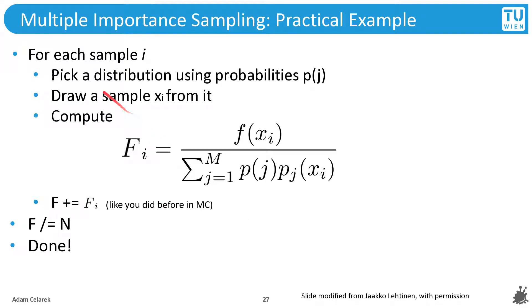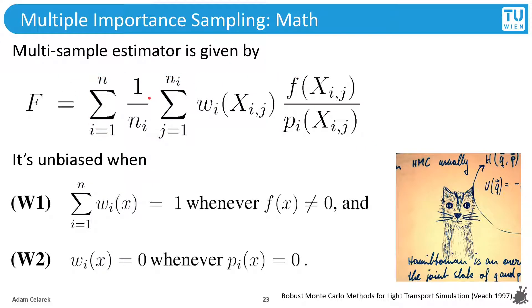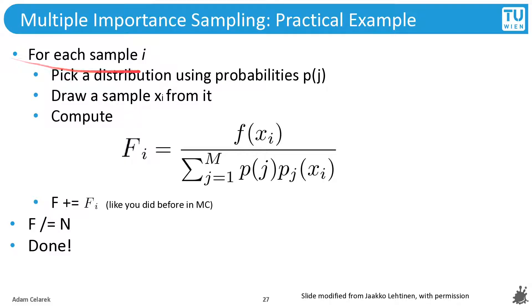Okay, so this is already the algorithm. For each sample, we pick a distribution with probability pj. And this is compared to what we had before, where we drew a fixed number of samples per strategy. This is why it's divided by the number of samples per strategy. Now, we have a fixed number of samples, overall samples. And we choose one of the sampling strategies with this probability. Then we draw a sample from it.